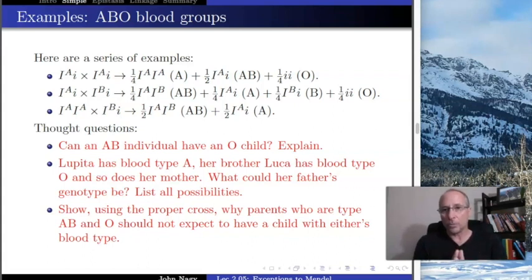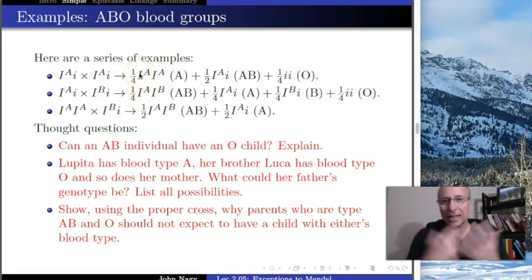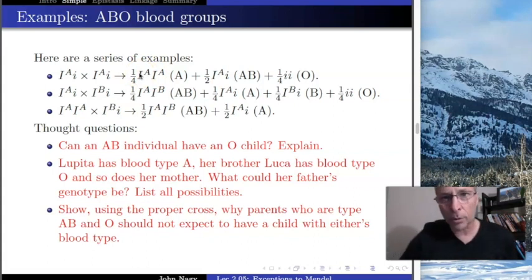Here's an example. It is possible for an individual who is AB to have a child who is phenotypically O. It's not possible for them to have a child who's genotypically O without a mutation, but it is possible for them to have a phenotypically O child. The reason is that sometimes these alleles don't quite penetrate through the phenotype.